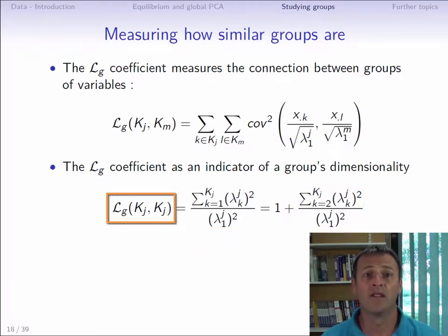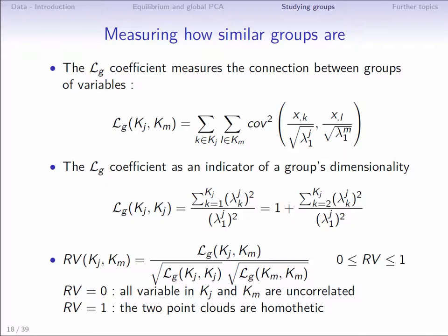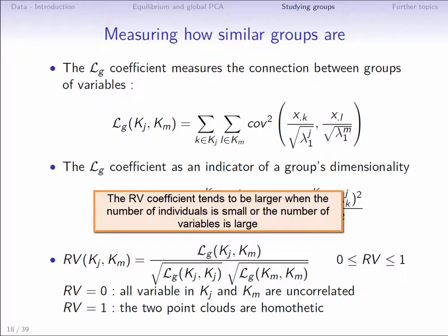This coefficient can thus be seen as a dimensionality indicator for a group. The disadvantage of calculating LG between two groups is that this criterion is not bounded. If instead this LG between two groups is normalized by the dimensionality of each of the groups, what we get is called the RV coefficient. This RV coefficient varies between 0 and 1, making it easier to assess whether two groups are linked. However, this coefficient tends to be larger when the number of individuals is small or when the number of variables in each group is large.